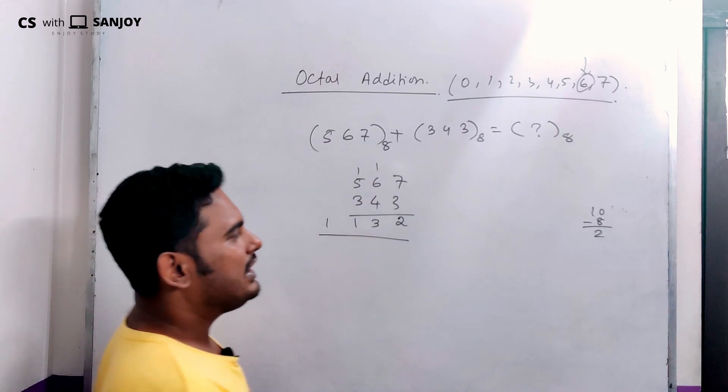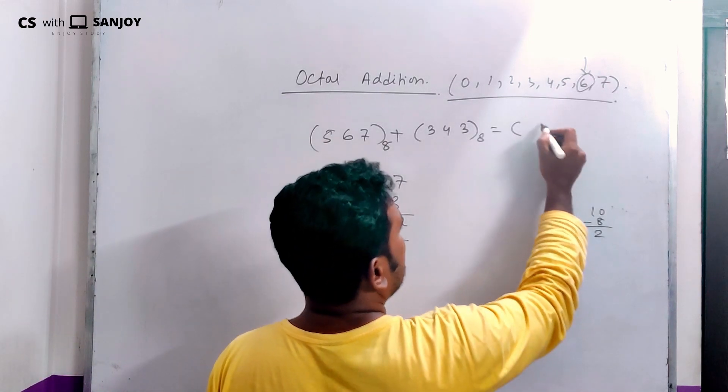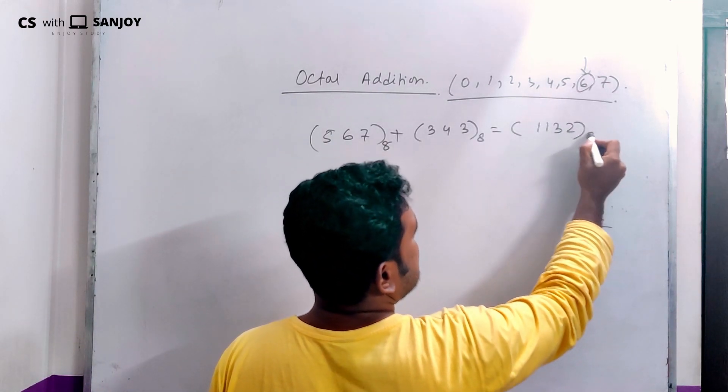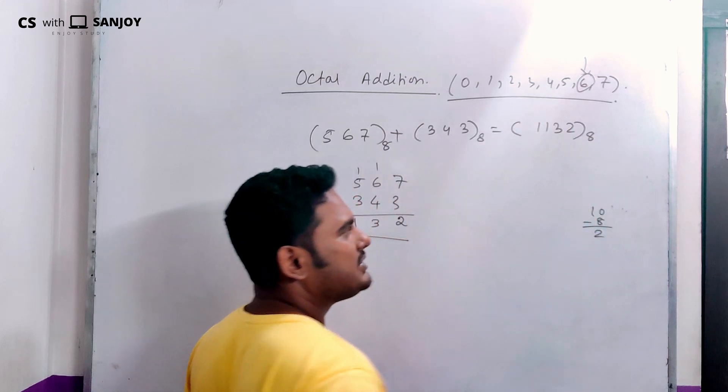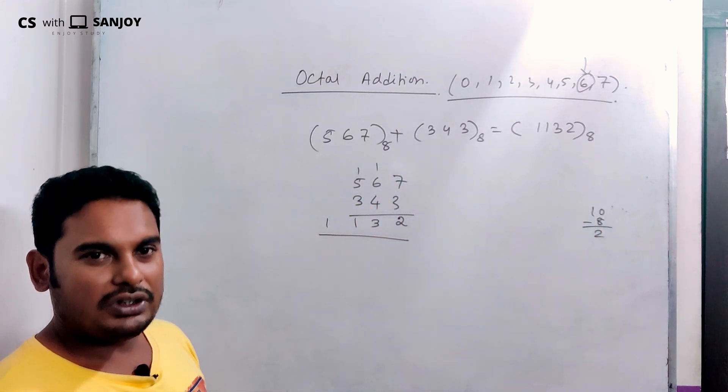So, the final answer is 1, 1, 3, 2 in base 8. This is how we compute the addition of octal numbers.